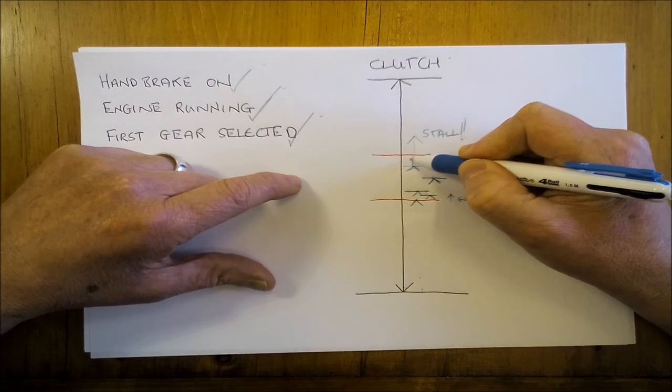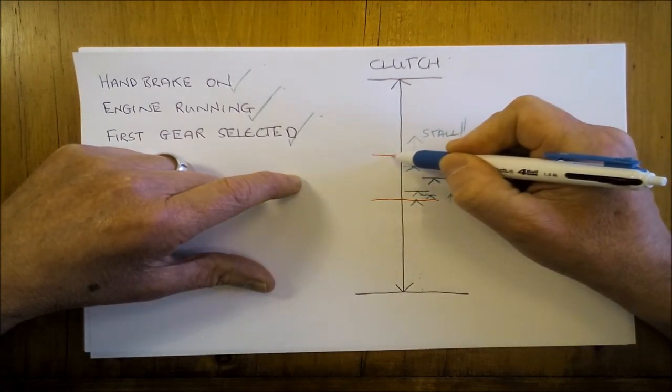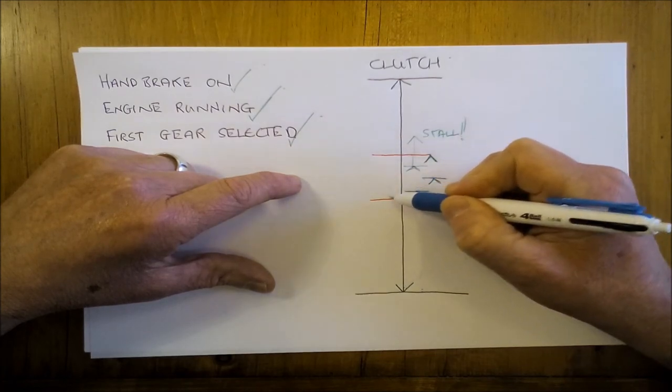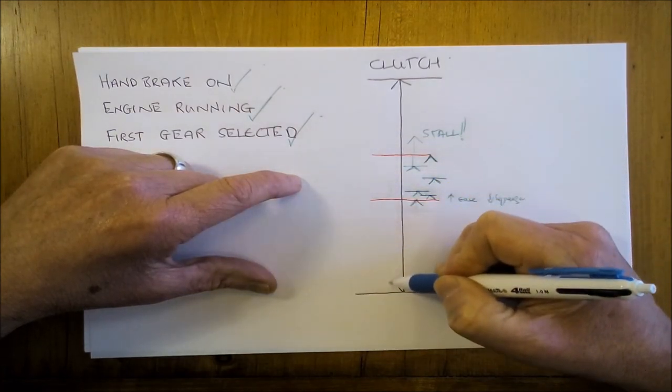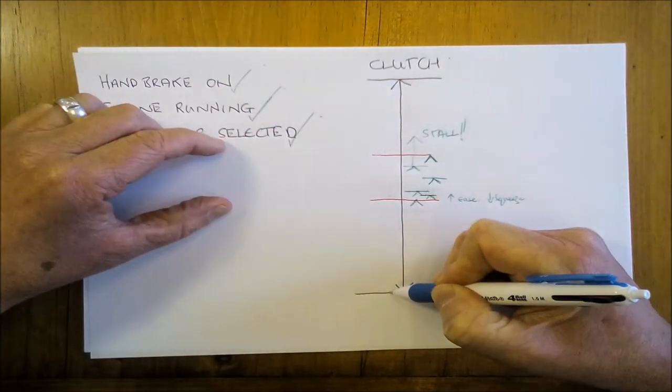But practice easing and squeezing your foot within this area here. Once you've done, you push the clutch all the way down, take it out of first gear which moves that out, and then you can take your foot all the way off the clutch.